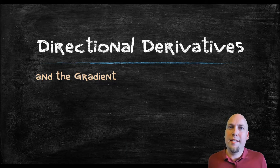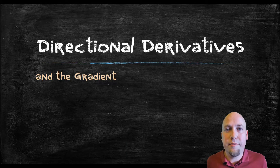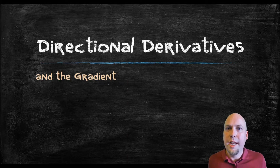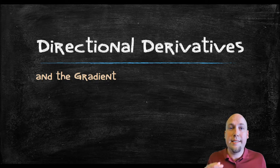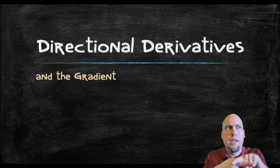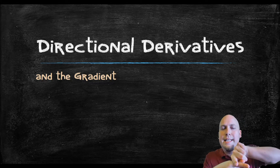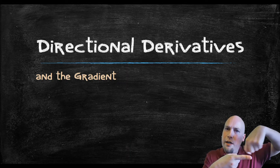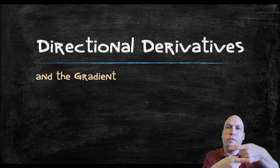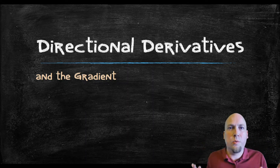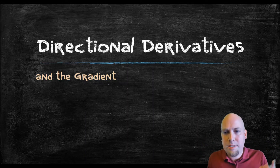My name is Nathan Johnston and today we're going to learn about directional derivatives. The idea is: imagine you've got a two-variable function. We've already learned how to take partial derivatives, and those tell you how quickly it's increasing or decreasing in the x direction and in the y direction. But what if you're going in any of the other directions? There are infinitely many different directions you can walk along that surface. What are the slopes or the derivatives in those directions? That's what we're going to learn about today.